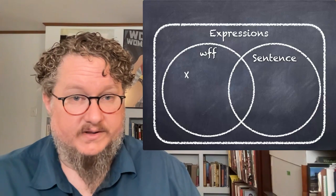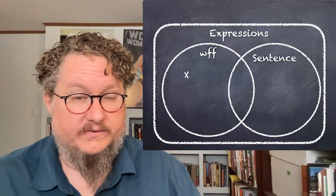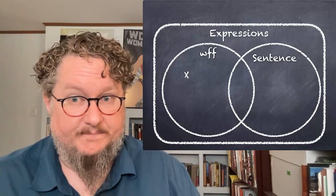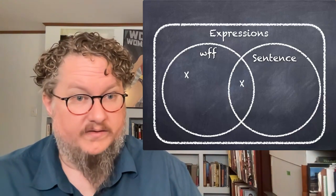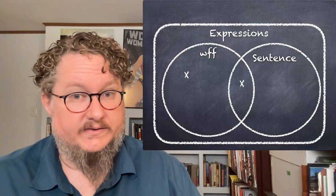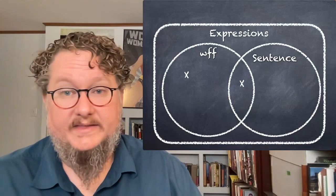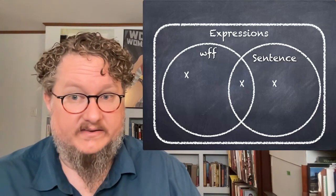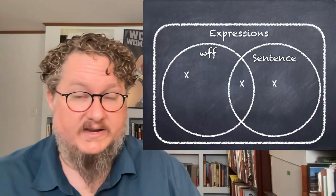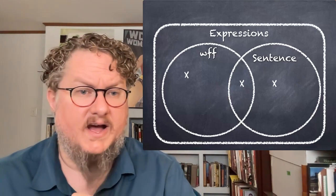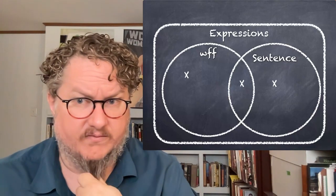So here, where there's a wff but not a sentence, those are wffs with free variables in them. Here in the overlap, these are wffs with no free variables. So those are sentences and wffs. And then over here, we've got the sentences that have been modified by the notational conventions, and so are not by the strict definition well-formed formulae.